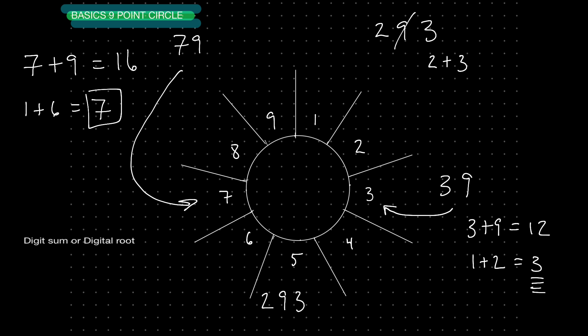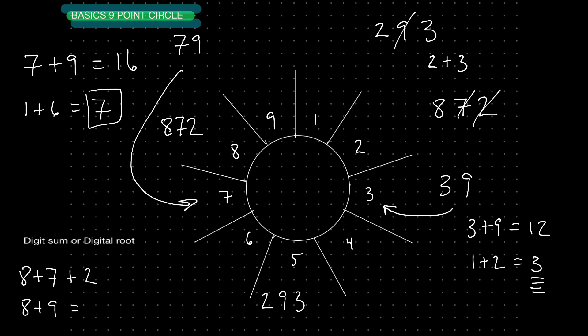So anytime you see the number 9, you can kind of ignore it — like we did, we crossed it out. We ignore it and just do a digit sum with whatever's left over. So if I have 872 and I want to know which spoke that lands on, I can see I can cross out 7 and 2 — because 7 and 2 add up to 9. So I automatically know 872 lands on spoke number 8. Watch: 8 plus 7 plus 2, that's 8 plus 9, which gives me 17. 1 plus 7 equals 8.